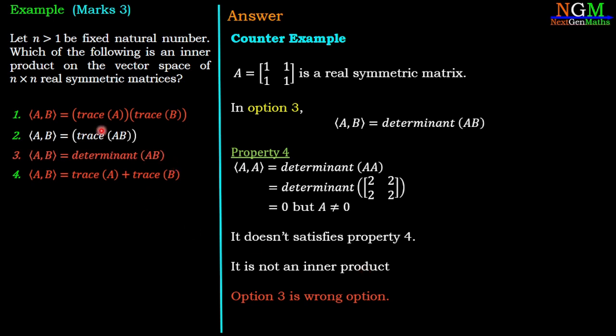So only one option is remaining, which is option 2: ⟨A,B⟩ = trace(AB), which is an inner product on the given vector space of n × n real symmetric matrices. So option 2 is the correct answer.